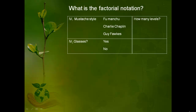The first thing that we need to do is figure out how many levels each variable has. So the first variable has three levels: Fu Manchu, Charlie Chaplin, and Guy Fawkes mustaches. And the second variable has two levels: whether somebody's wearing glasses or not. So we would say that this is a three by two study.